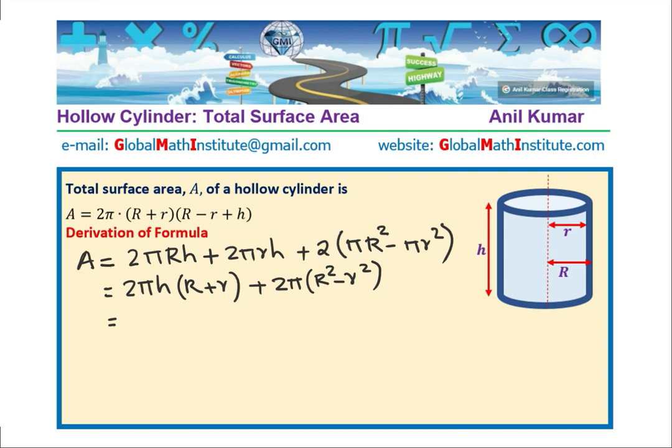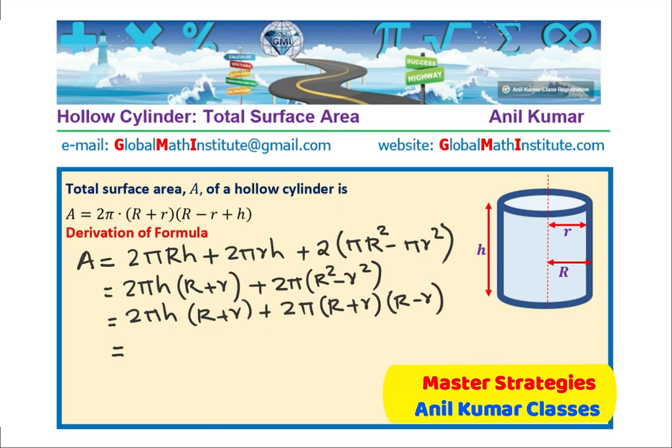Now, difference of squares can be written as sum and product. So we can write this as 2πh(R + r) plus 2π(R + r)(R - r). Now clearly we can take 2π(R + r) common.